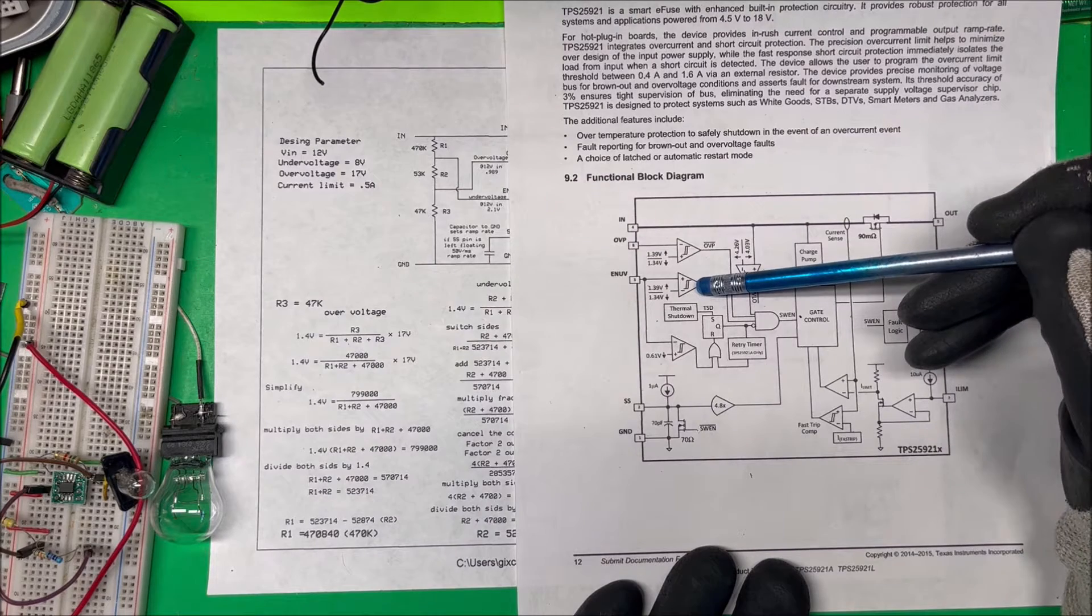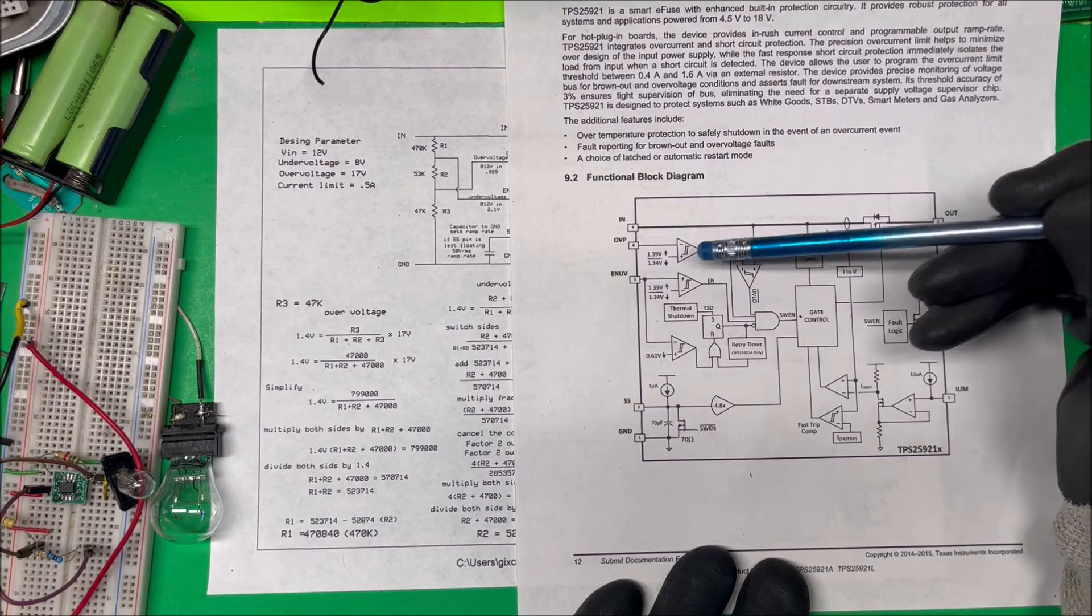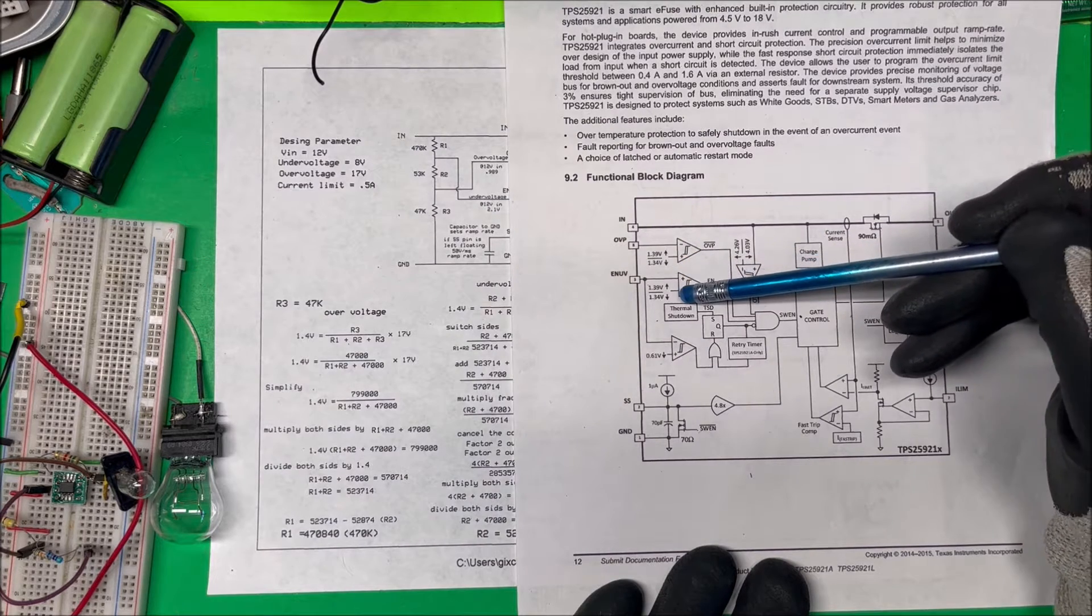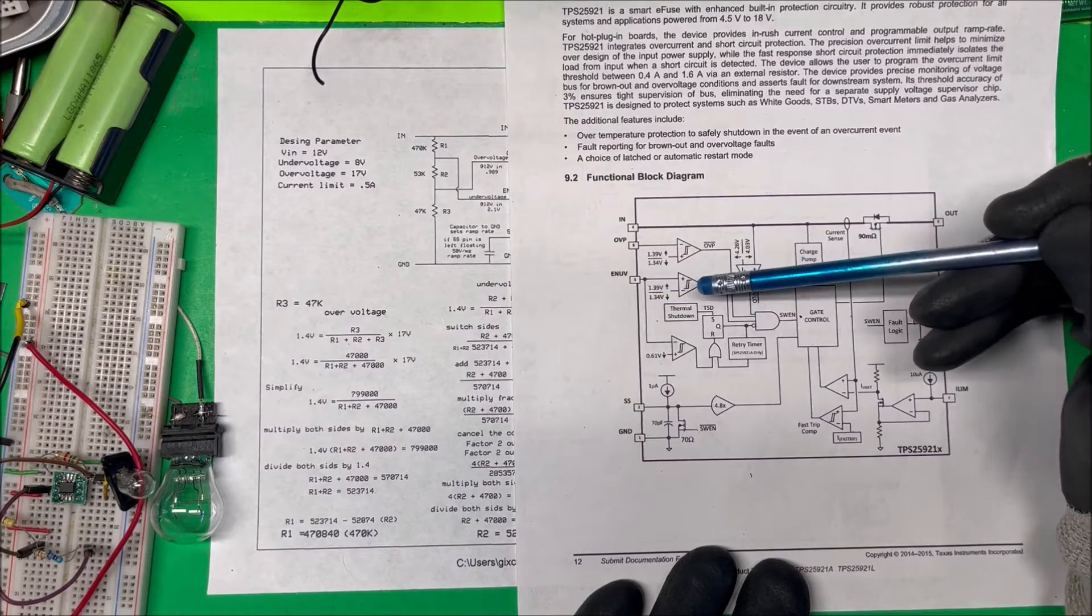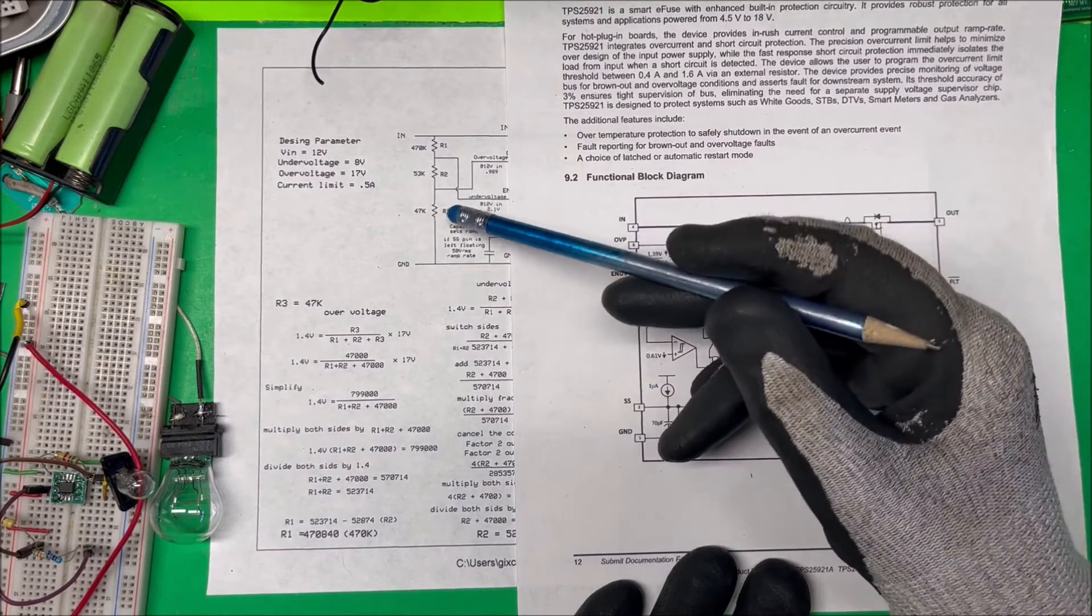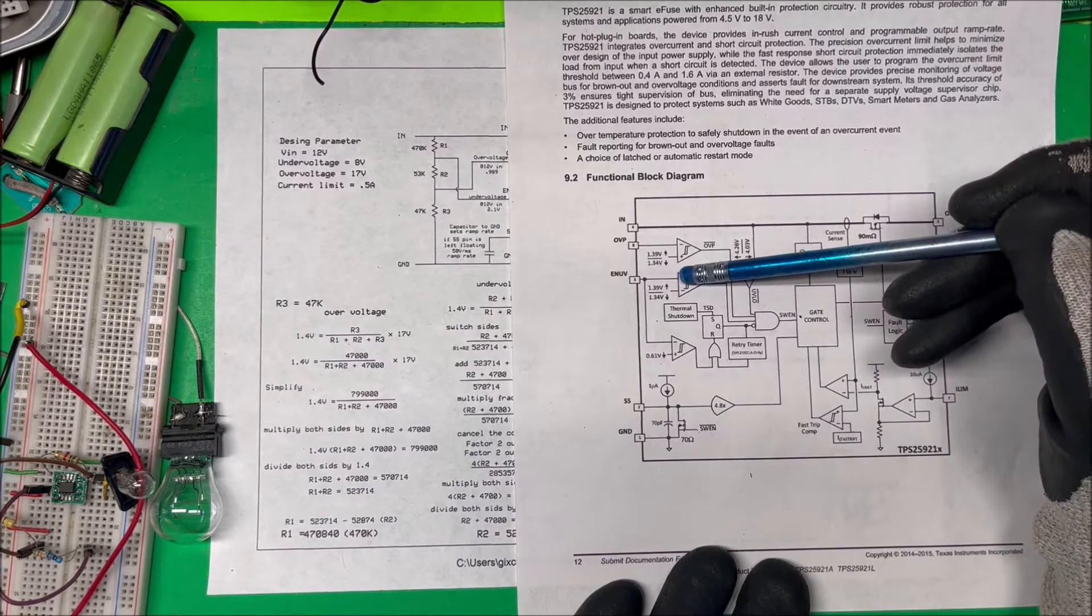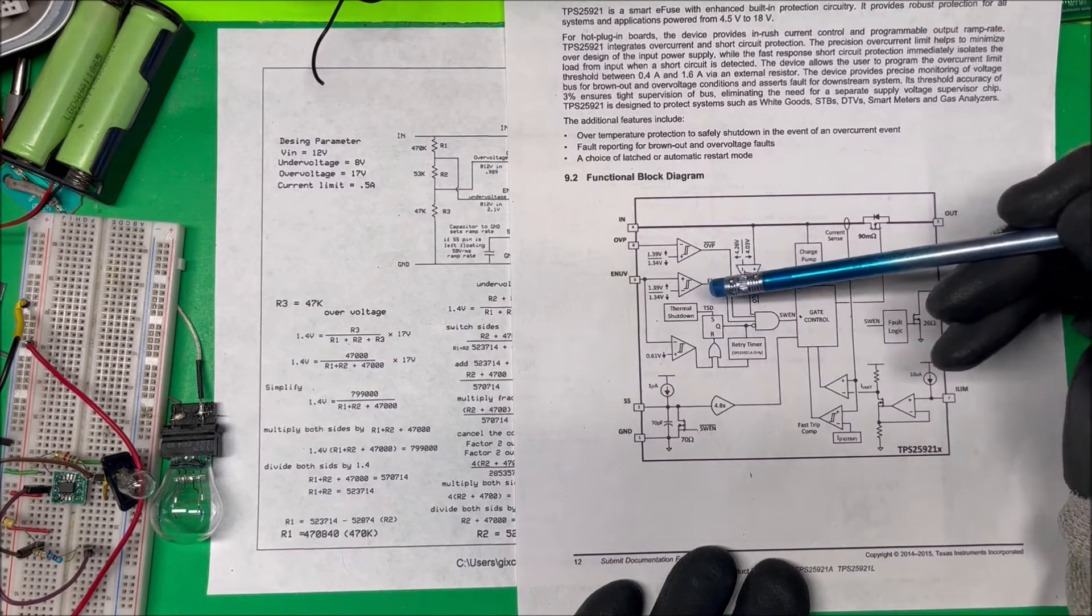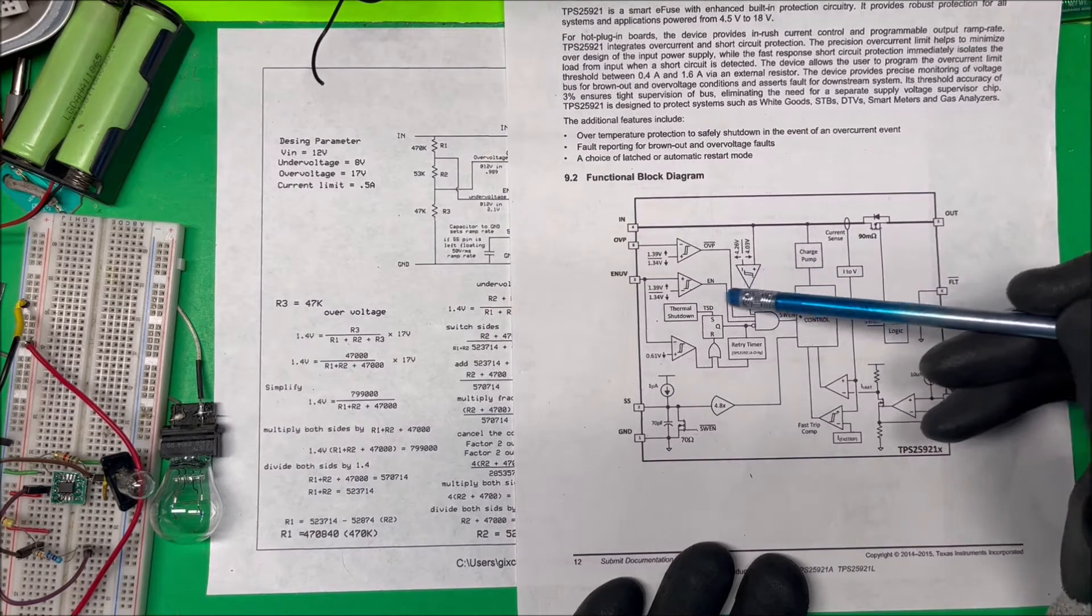This pin 3 is our undervoltage. On the negative side we have an internal reference of 1.4 volts, and on the positive side, because of our voltage divider, it's going to be 2 volts. The positive is higher than the negative, so this is going to go high. These three are all high.